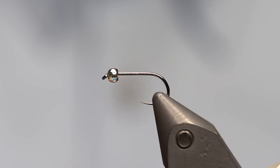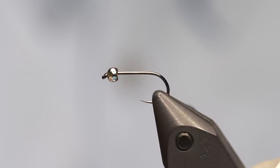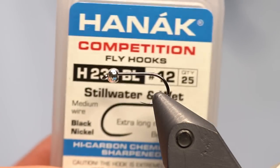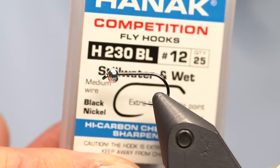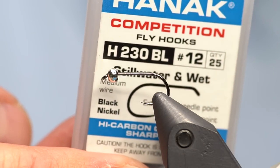It starts out with a nice hook. We've got a Hanak 230 here. This is a size 12. You could do them in 14, 16s, even as big as a 10.